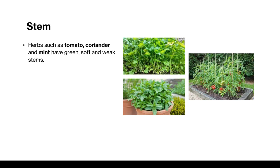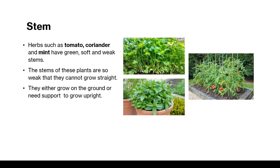Herbs such as tomato, coriander and mint have green, soft and weak stems. The stems of these plants are so weak that they cannot stand straight. They either grow on the ground or need support to grow upright.